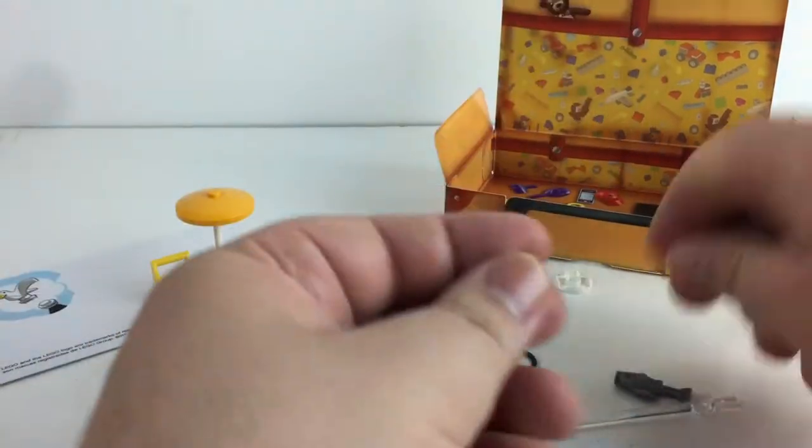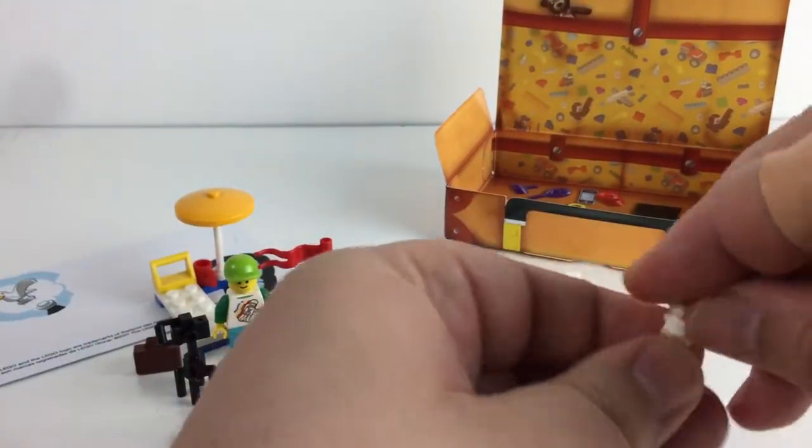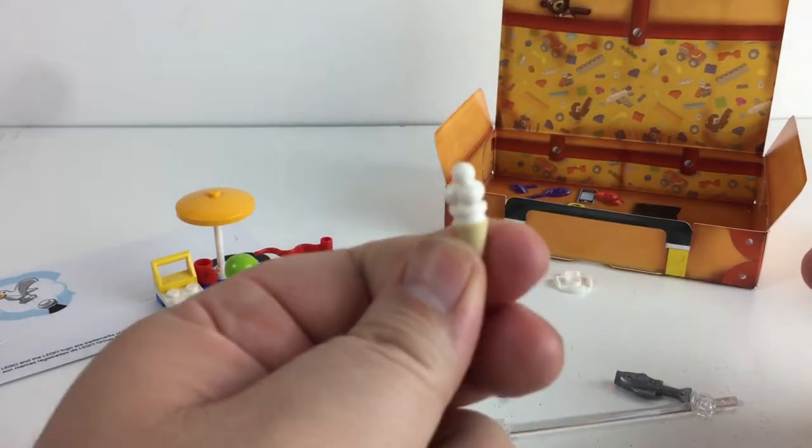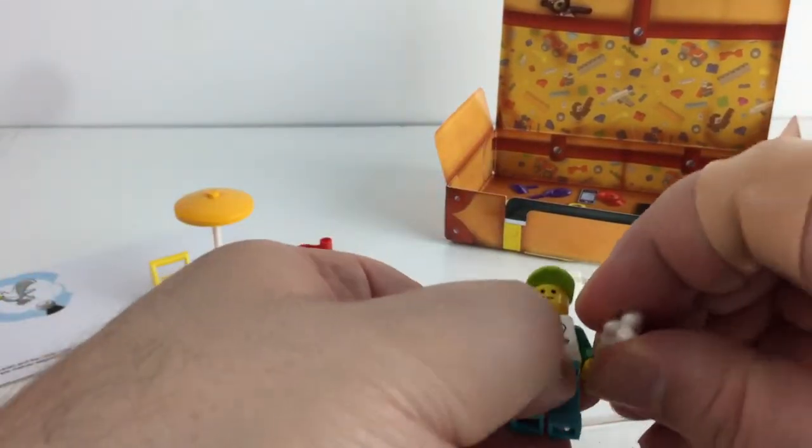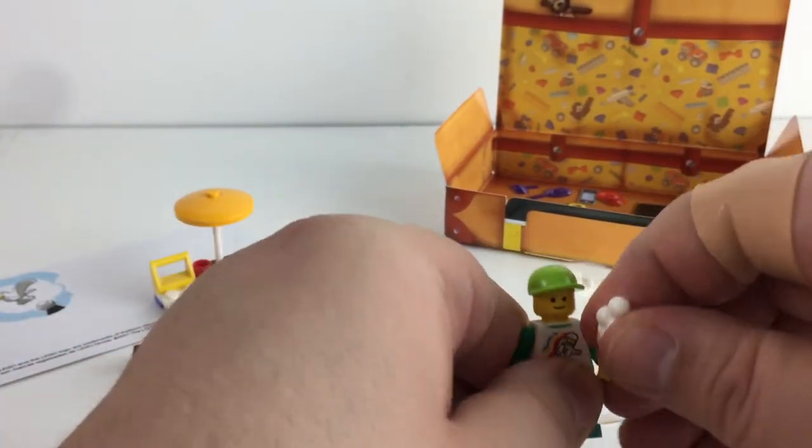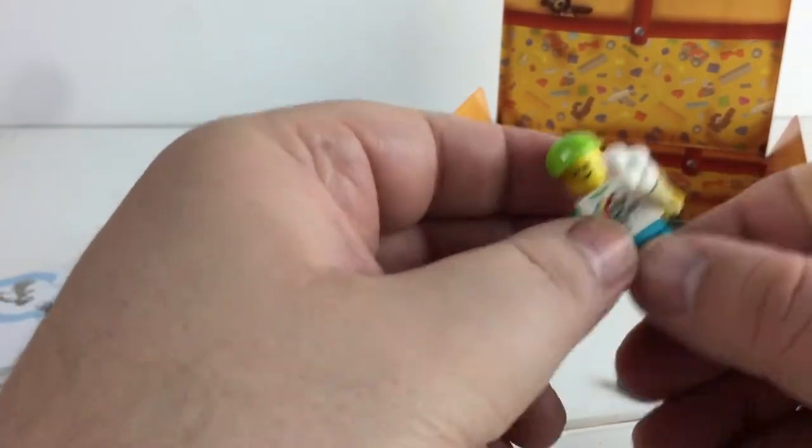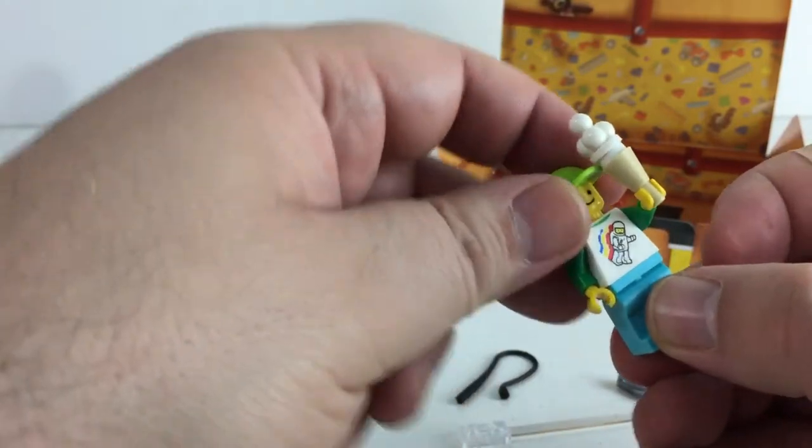He has an ice cream cone—that's adorable. I'm gonna put that right in his hand because he's hungry for some ice cream. He's been in that box a while, traveling in the mail. Now he's got his ice cream cone.